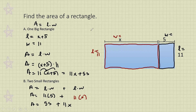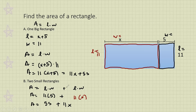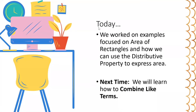Hopefully that is making sense. This is just a matter of approach — if you like seeing it as one big rectangle, that's fine; or if you see two small rectangles, that's also fine. Either way is good, as long as you understand how we're finding area and how the distributive property relates these two answers. That is the conclusion of our discussion on area and the distributive property. Today we worked on many examples and saw how the distributive property can express area. Next time, we will learn how to combine like terms. Thank you so much for your time and attention — I hope you enjoy the rest of your day.